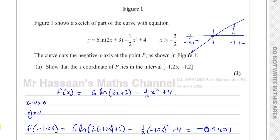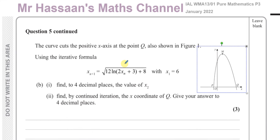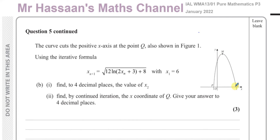Moving on to part 5B: the curve cuts the positive x-axis at the point Q, as also shown in figure 1 — so there's another place where the curve crosses the x-axis, that's Q.